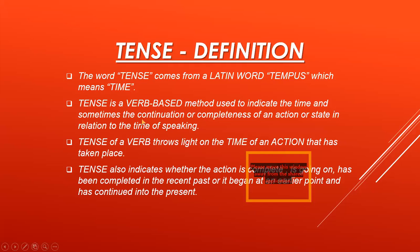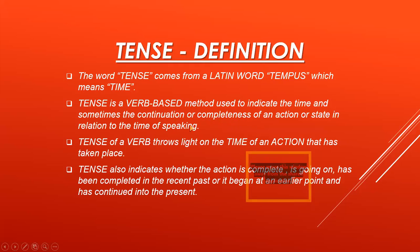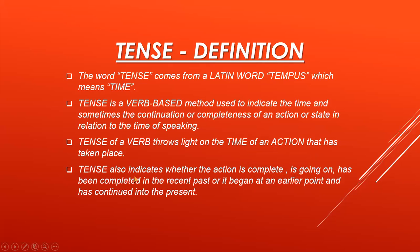Some actions are in continuation like continuous tenses, or some actions are in completeness like perfect tenses. We are doing different kinds of tenses under the heading of tense, but you should know that it is a verb-based method to indicate the time of an action. Tense of a verb throws light on the time of an action that has taken place. Verb is an action word. Tense also indicates whether the action is complete, is going on, or has been completed in the recent past.